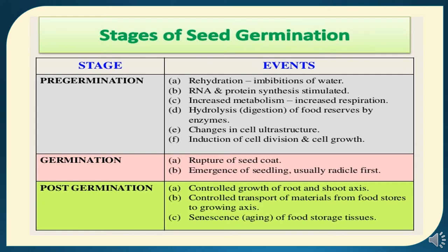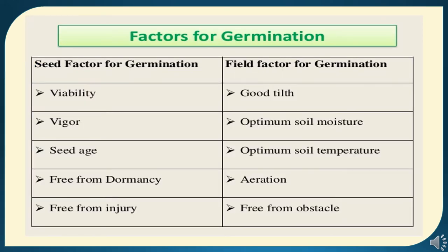The factors for germination are divided into two types: seed factors and field factors. Under seed factors, these represent the seed's internal qualities like seed viability, seed vigor, seed age, freedom from dormancy, and freedom from injury. As field factors are concerned, these depend on good tilth conditions, optimum soil moisture, optimum soil temperature, aeration, and freedom from obstacles. If these combinations are good, there will ultimately be high germination.